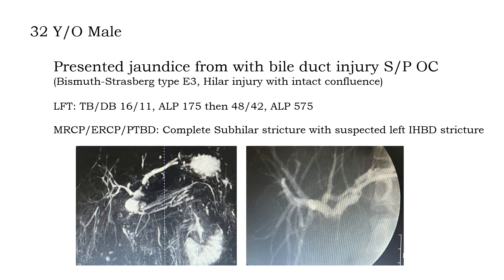In this case, for open course, the patient had E3 injury. Total bilirubin was elevated up to 16, and direct bilirubin up to 48. Liver tests were really high, more than 500. MRCP, S&P, and PDPD were performed.